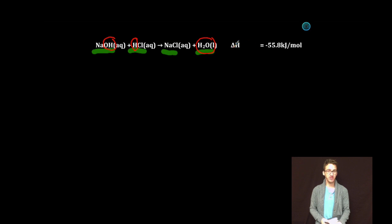So although many times you'll just see delta H equals, sometimes you'll see a little subscript, neut for neutralization. It means the same thing. It's just giving us a little more information about the type of reaction.